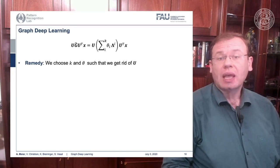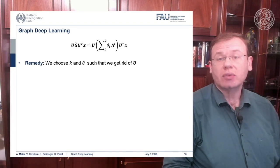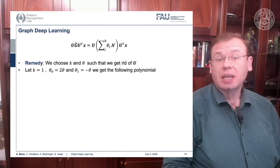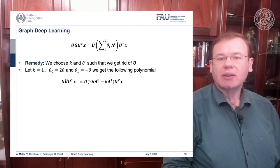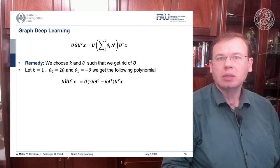So how can we choose K and theta to get rid of U? If we choose k equals 1, theta_0 to 2 theta, and theta_1 to minus theta, we get the following polynomial. We still have the configuration with x transformed into Fourier space times our polynomial expressed as matrix times the inverse Fourier transform.